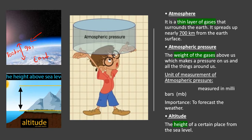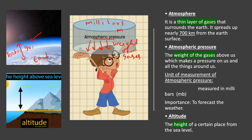The next term we must identify is atmospheric pressure. When we stand on the earth there is a certain pressure acting on us, and it is basically the weight of gases. We call this atmospheric pressure, which is measured in a unit called millibars, with the symbol mb. Atmospheric pressure is very important because it is used to forecast the weather.